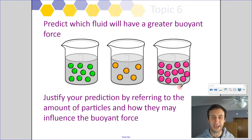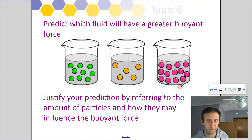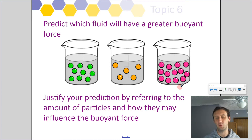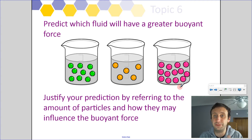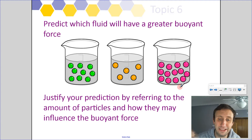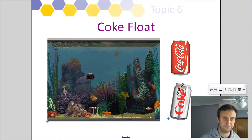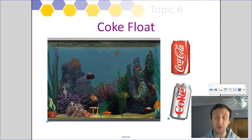Let's consider these three different beakers and the fluids in them — which one do you think would have the greatest buoyant force? This is all about density. The green one is medium density, orange is low, and the pink is high density. The answer is the pink one — it has the highest buoyant force because it has the particles closest together. More densely packed particles exert more force on something going into it. Higher density means more buoyant force. A great example of this is regular Coke versus diet Coke — I don't want to ruin the surprise, so watch the video.